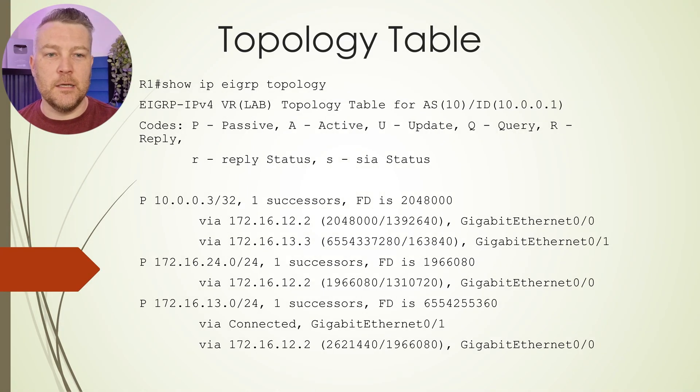EIGRP is configured with the concept of autonomous systems. This is where the topology table can contain all prefixes advertised within this autonomous system. And we can see this if we type in the command show IP EIGRP topology.